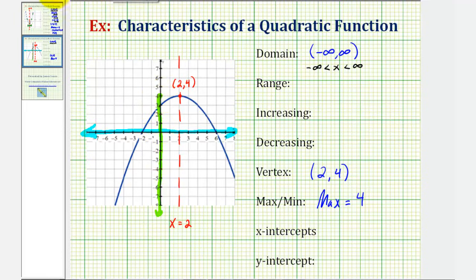So the range using interval notation would be the interval from negative infinity to positive four, but the interval is closed on four because four is included in the range. Or using inequalities, we would say y is less than or equal to positive four.